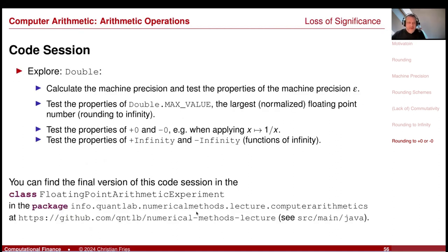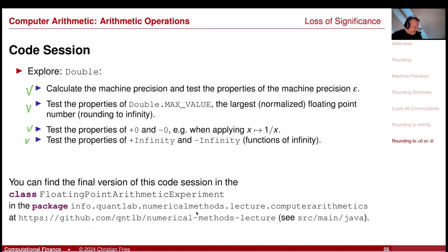That was a little tour through computer arithmetic. All our experiments are in our lecture repository under computer arithmetic — you can find the floating-point arithmetic experiments with everything we did, including a section on negative and positive zero. You can explore machine precision, the max value which leads to rounding to infinity, and plus and minus zero and infinity.